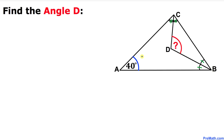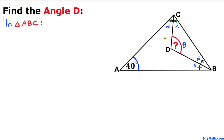Let's get started. I'm going to call each half of angle C as alpha, so angle C equals alpha plus alpha. As for angle B, I'm going to call each half beta, so angle B equals beta plus beta. And I'm going to call angle D as theta. Now let's focus on the big triangle ABC.